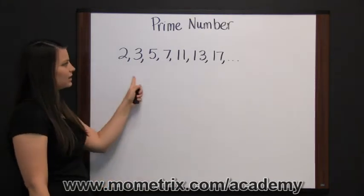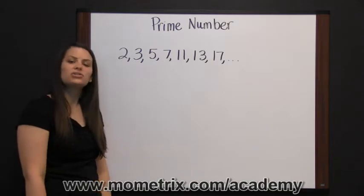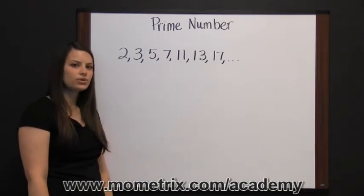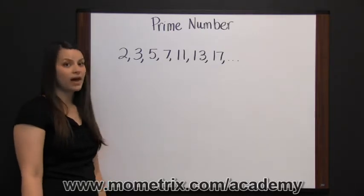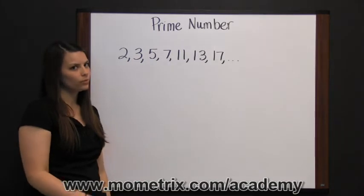Notice that in our list of prime numbers the number one is missing. One is not considered a prime number since it doesn't have two divisors or two factors. One can only be divided by itself, one.